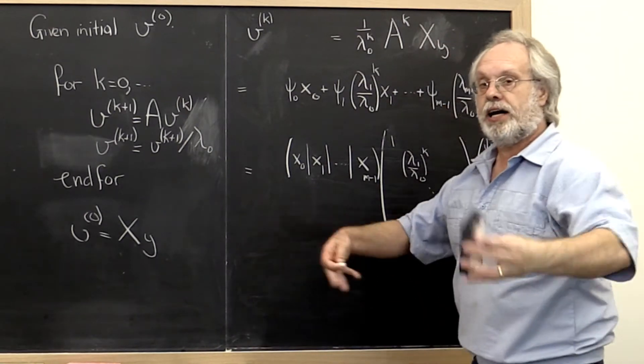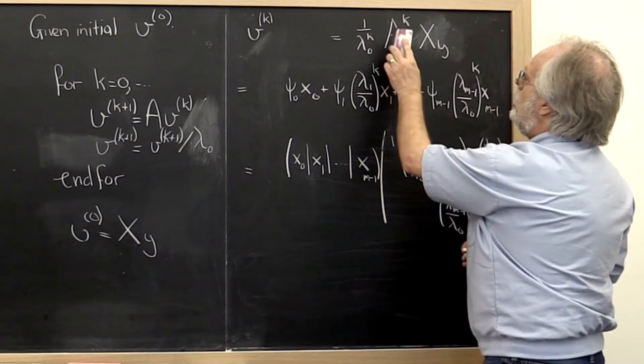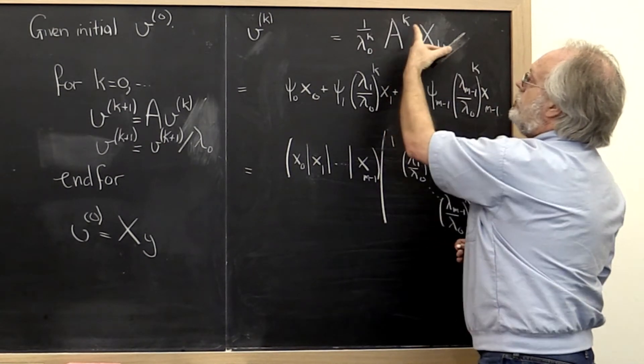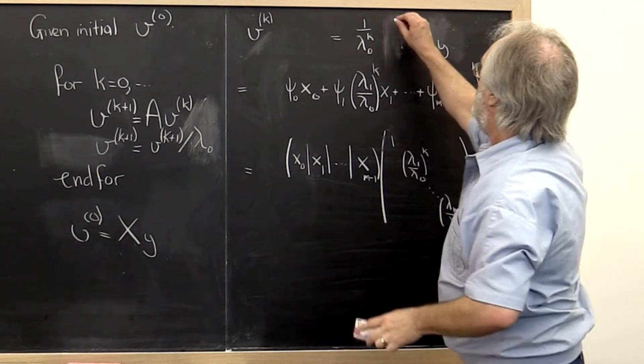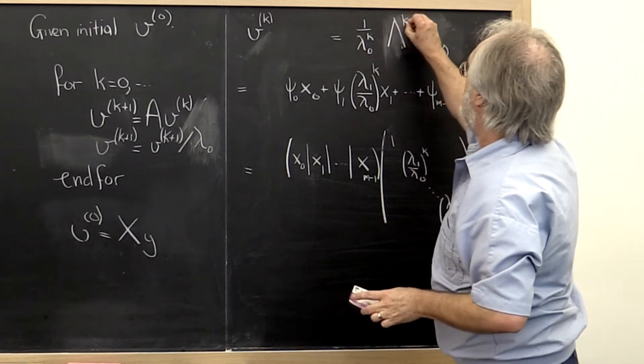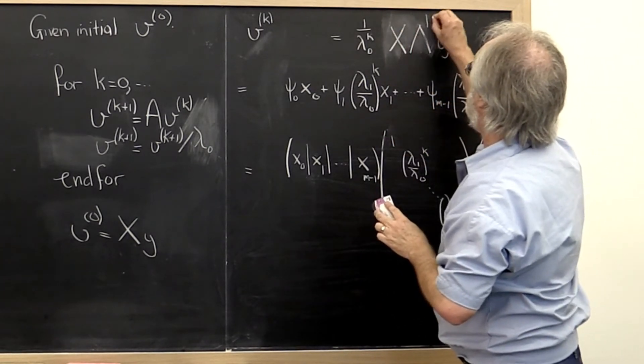But then if you think back about how we developed the power method, really what happens is that A to the kth power times x is the same as lambda to the kth power times x times lambda to the kth power.